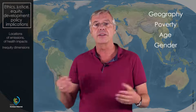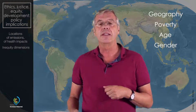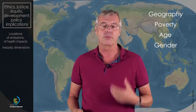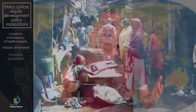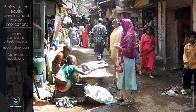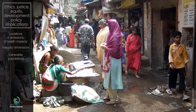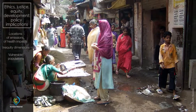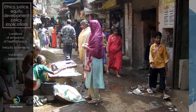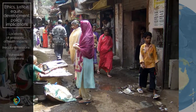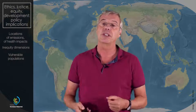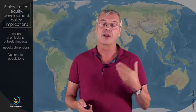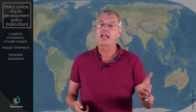Gender is another of these inequity dimensions, and this is intuitive. Poor countries and poor households — like this picture here in a slum of an Indian town — make it very intuitive that climate impact is greater where you have no drainage, no barriers against inundation. This population is more vulnerable than those in non-poor settings.